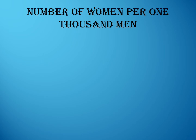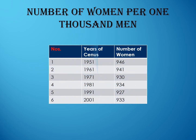Students, note this: the number of women per 1000 men. This is the table of census years and the number of women in that year. Kindly find out the reasons why the number of women per 1000 men in the population has been decreasing.